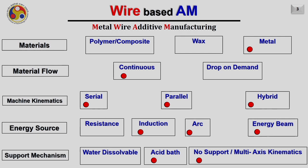This is our classification. We have already seen processes related to polymers and their variants. Now our focus will be on processes that use metal as material. There are different options for material flow, machine kinematics, energy source, and support mechanism. The possible options are highlighted in red.